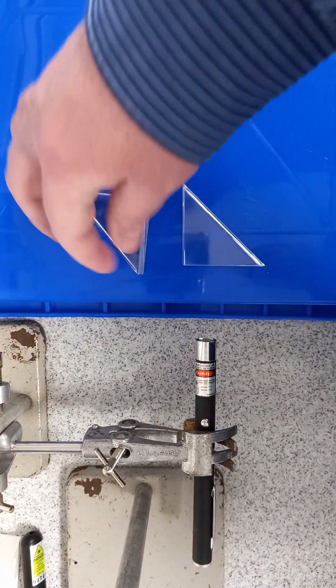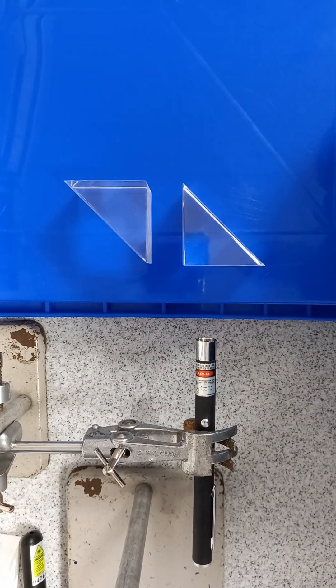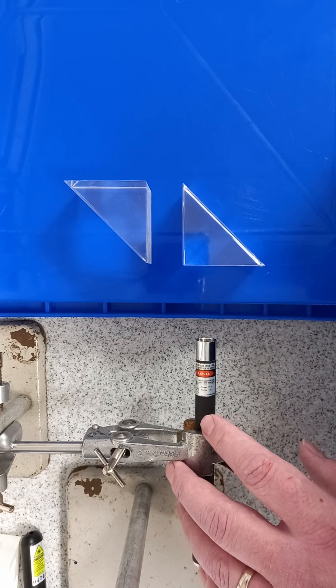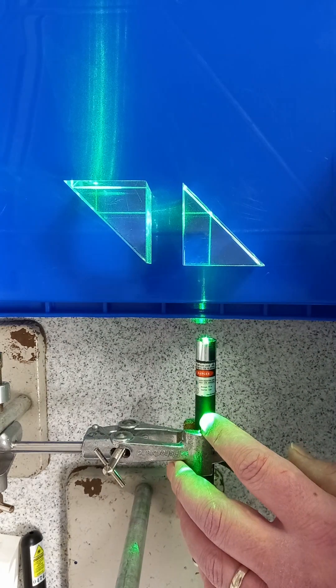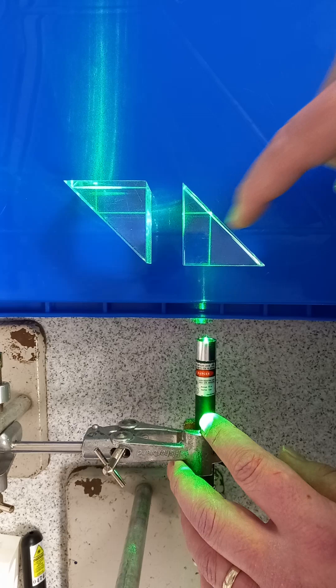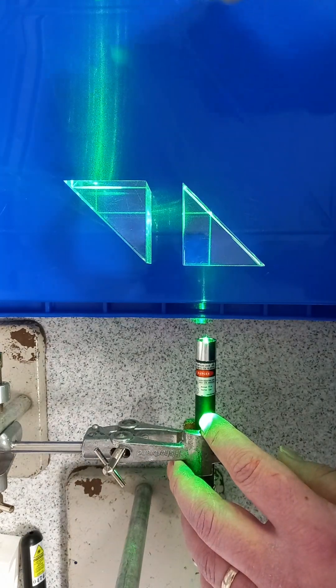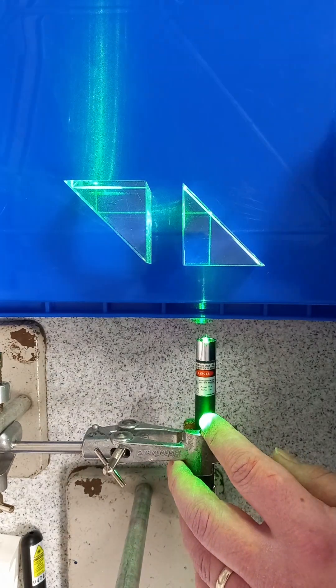And then if I change this one slightly with this prism, now this is a bit like a prismatic periscope. So there we go, you've got total internal reflection here and up here and then going out. You could obviously extend this quite a bit.